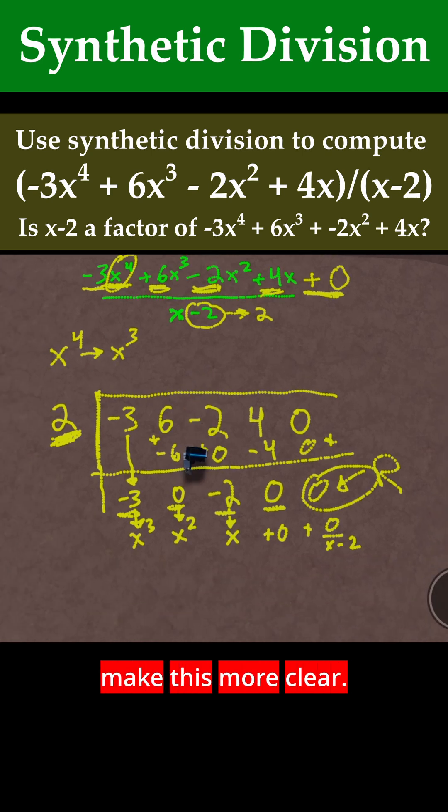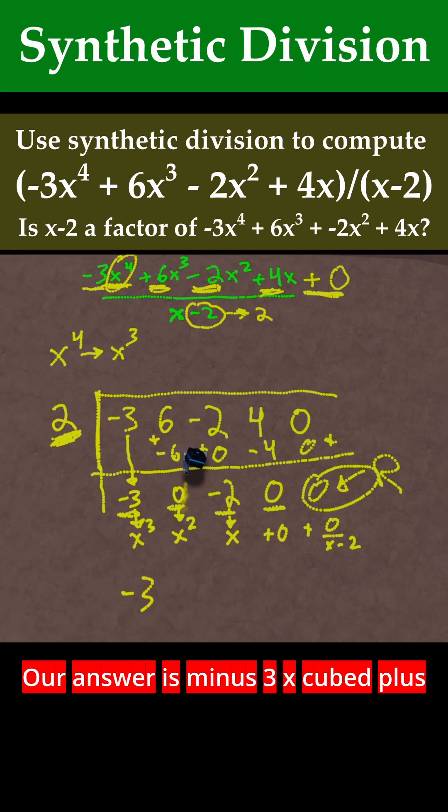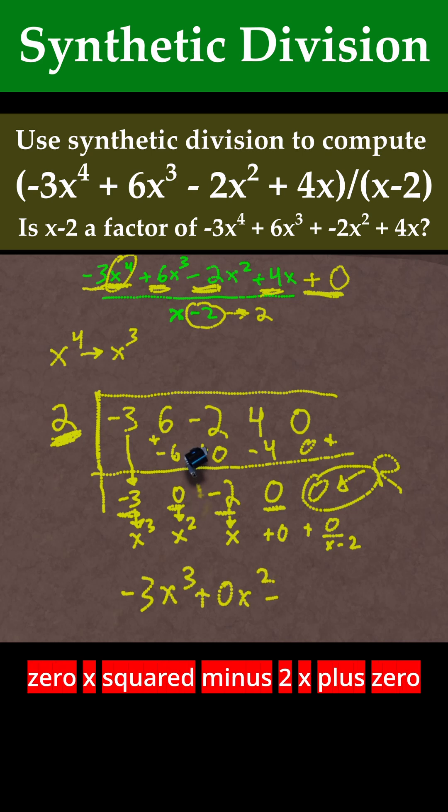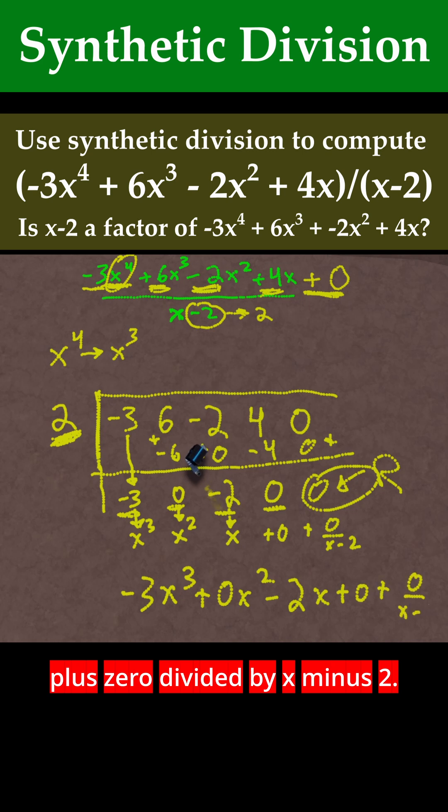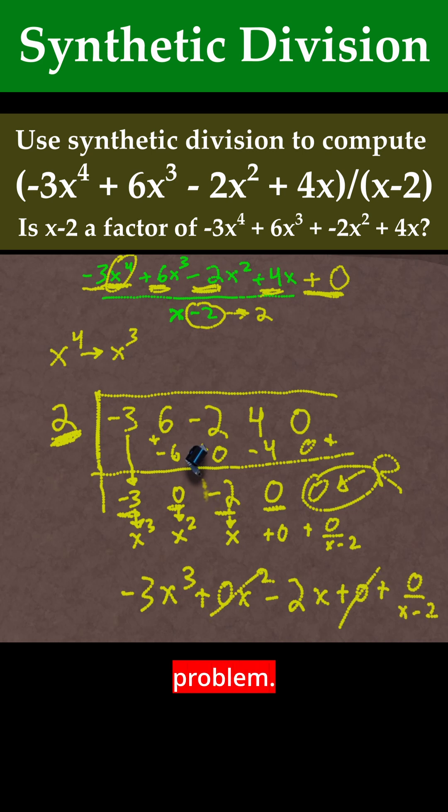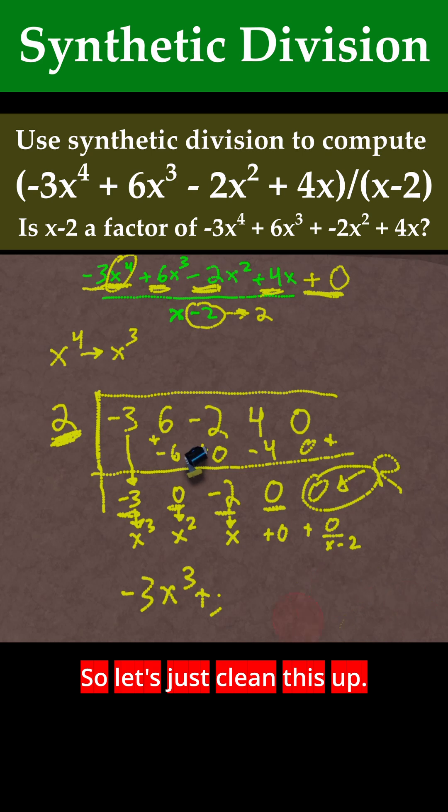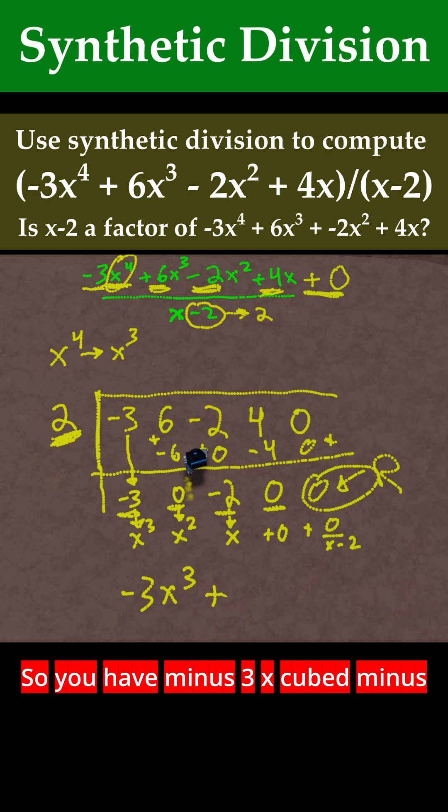Let me just make this more clear. Therefore, our answer is -3x^3 + 0x^2 - 2x + 0 + 0/(x - 2). Now there's a lot of zeros in this problem, so let's just clean this up. We have -3x^3 - 2x.